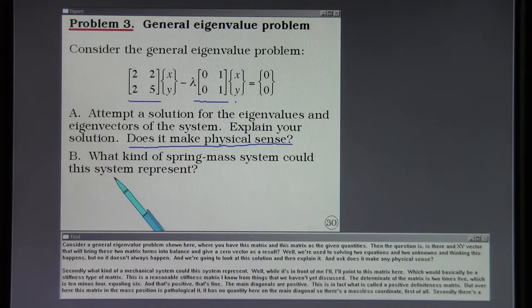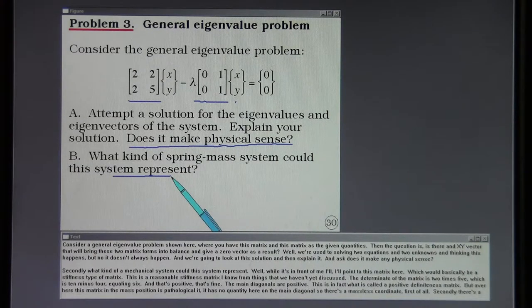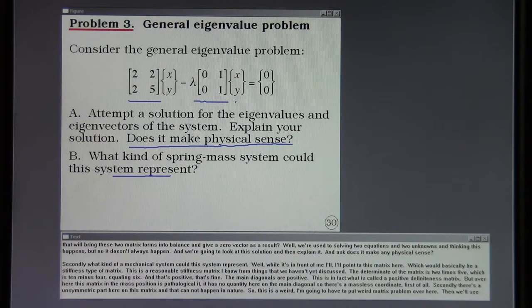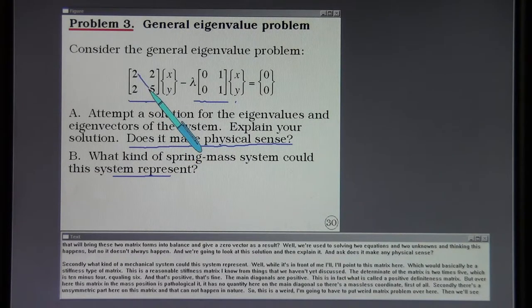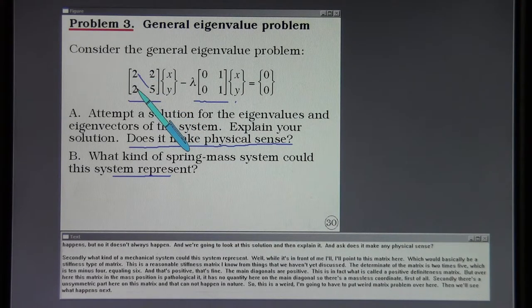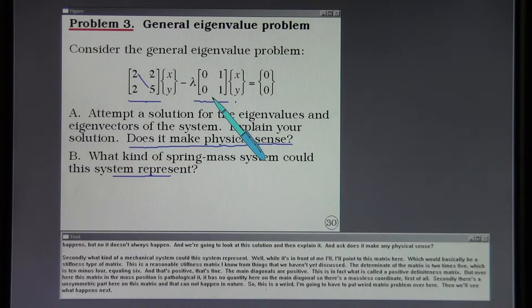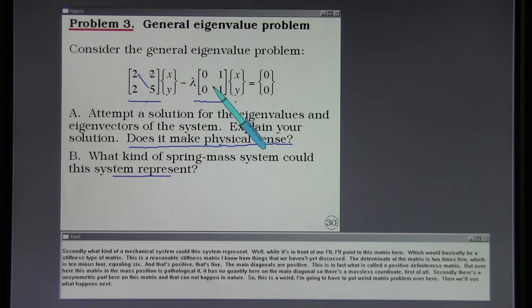While it's in front of me, I'll point to this matrix here, which would basically be a stiffness type of matrix. This is a reasonable stiffness matrix. I know from things that we haven't yet discussed. The determinant of the matrix is 2 times 5, which is 10 minus 4, equaling 6. That's positive. That's fine. The main diagonals are positive. This is, in fact, what is called a positive definite matrix. But over here, this matrix in the mass position is pathological. It has no quantity here on the main diagonal. So there's a massless coordinate, first of all. Secondly, there's an unsymmetric part here on this mass matrix. And that cannot happen in nature. So this is a weird matrix problem over here. Then we'll see what happens next.